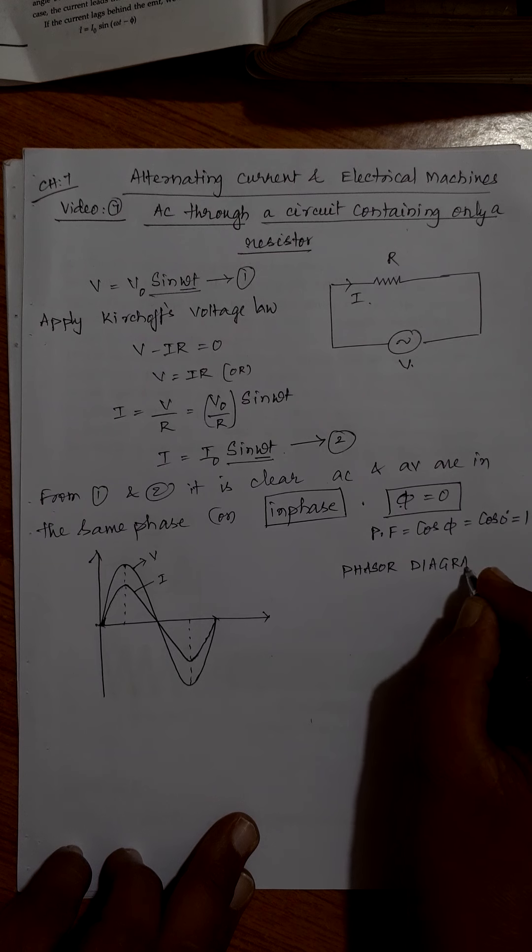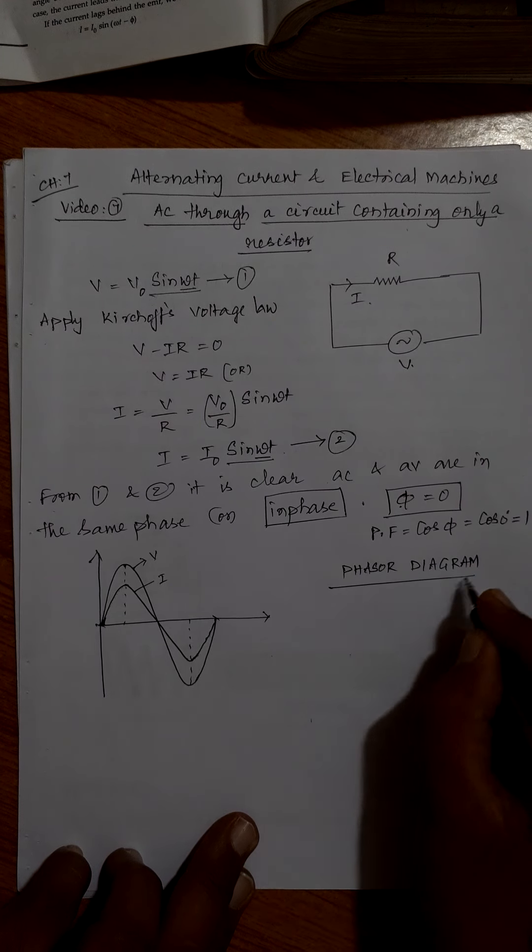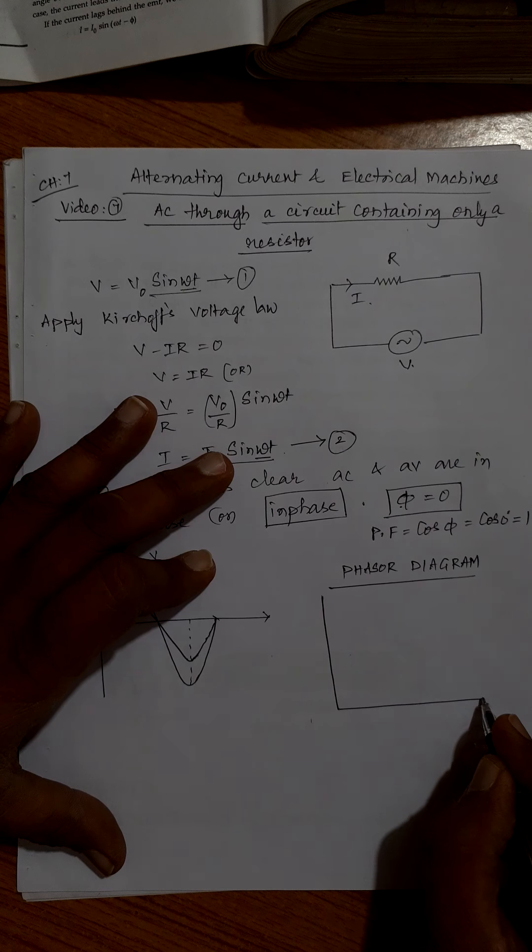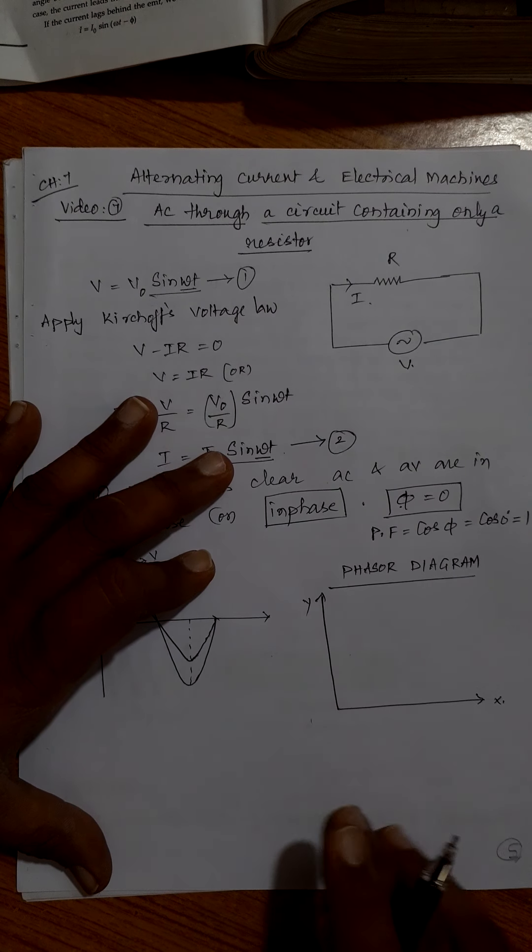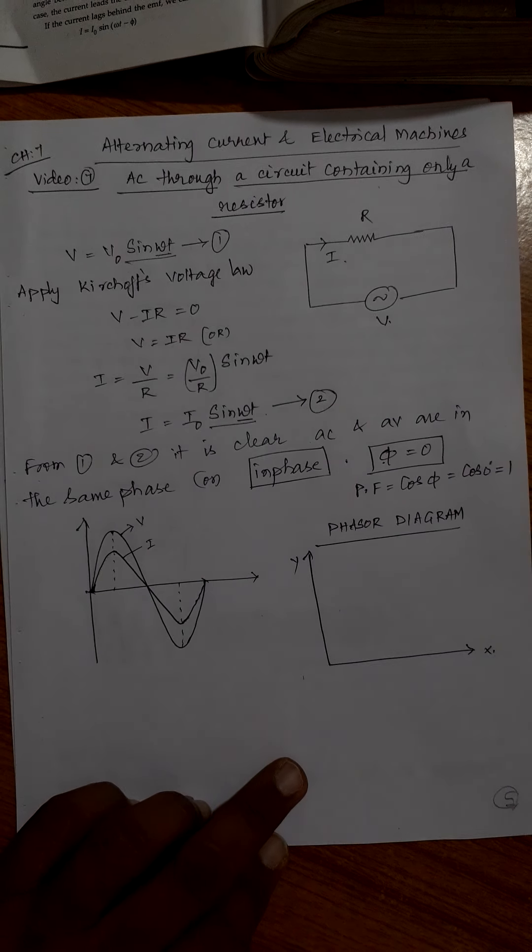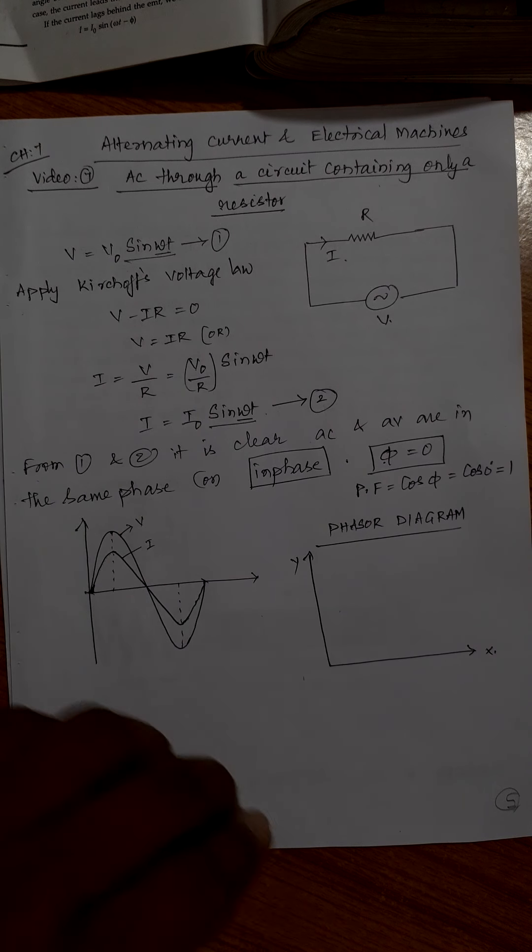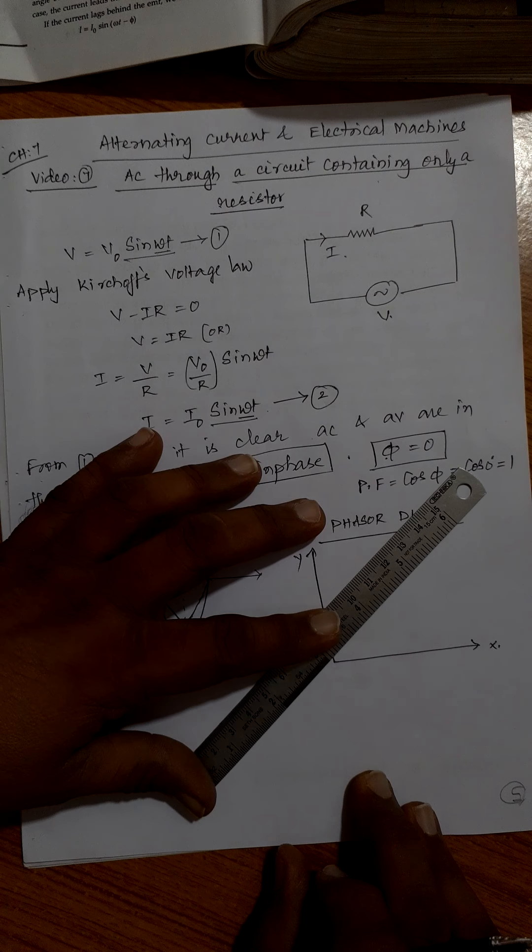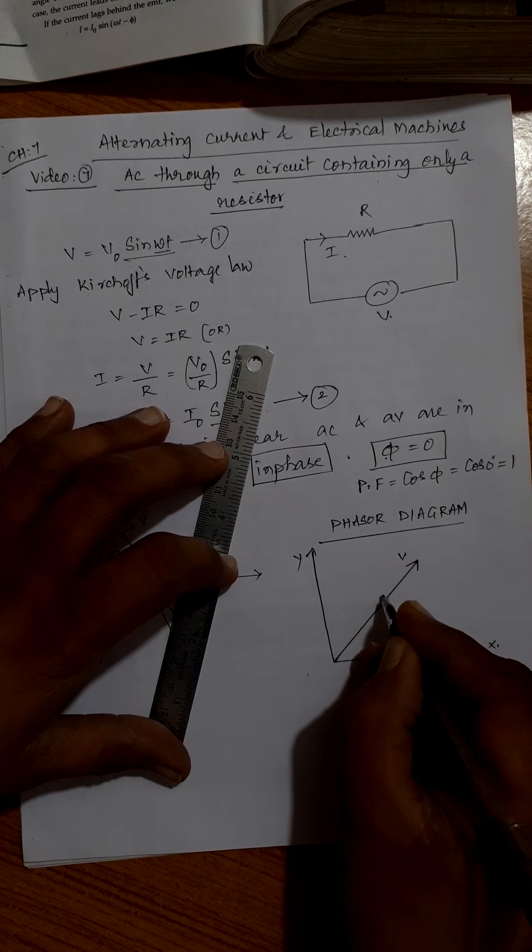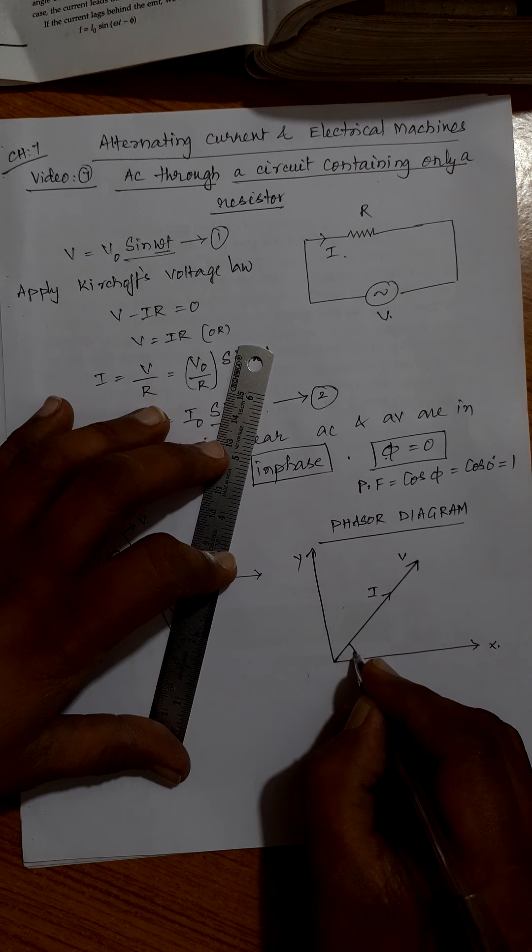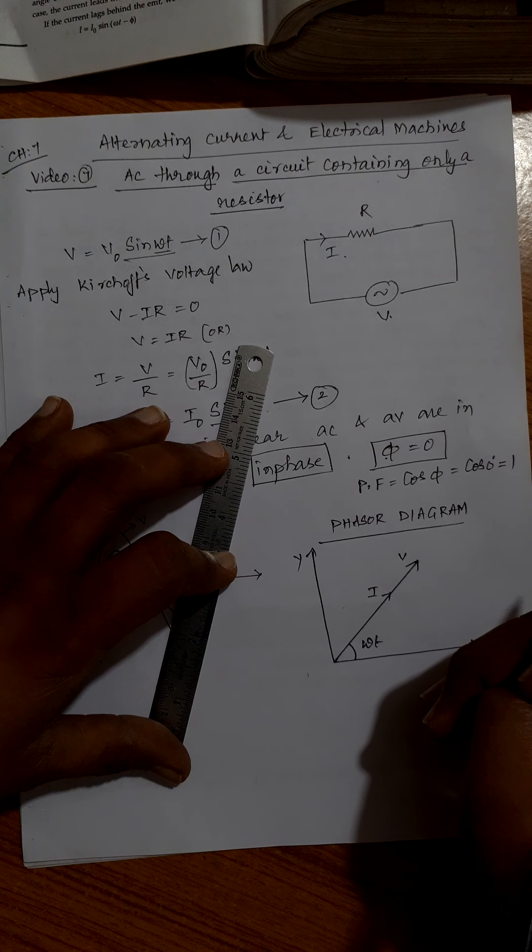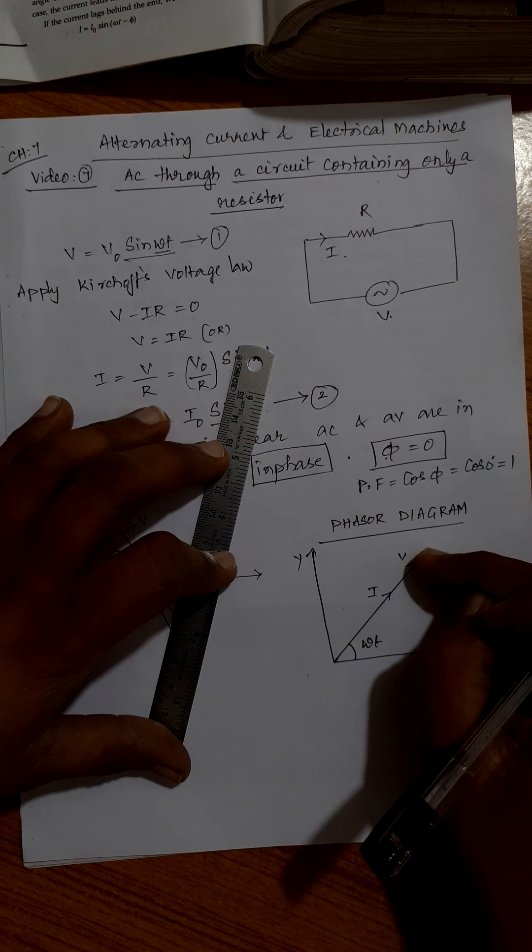You can follow two types of phasor diagrams. In the case of resistance, in the textbook, what they do, they draw x and y axis. Since both are in the same phase, at any instant you want to draw the phase, so represent, draw a line here, one for voltage, another for current.